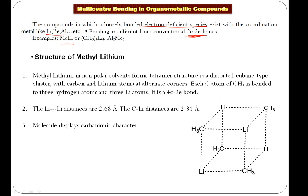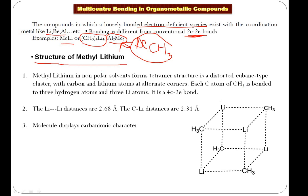Examples include methyl lithium, which exists in the form of a tetramer, and trialkyl aluminum — an alkyl aluminum that exists in the form of a dimer. Trialkyl aluminum is basically aluminum bonded with three methyl groups (Al(CH3)3), but since it exists as a dimer it is written as Al2Me6.